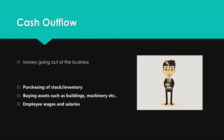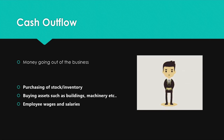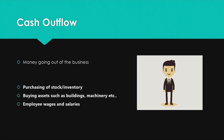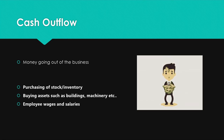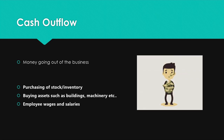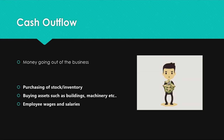Cash outflow is when money is going out of the business. Examples include purchasing of stock or inventory — to purchase stock you are paying money, so cash is going out of the business. Other examples are buying assets such as buildings and machinery, and employee wages and salaries — when you pay employees their wages or salaries, money is going out of the business.